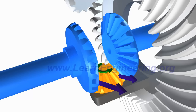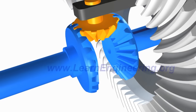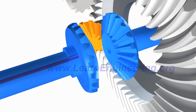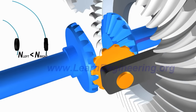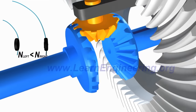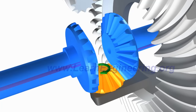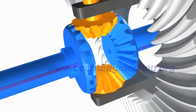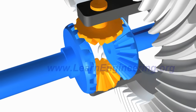This is the way the differential manages to turn left and right wheels at different speeds. While taking a left turn, the spider gear will spin in the opposite direction. In order to carry more load, one more spider gear is usually added, and a four spider gear arrangement is also used for heavy load vehicles.